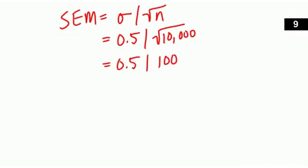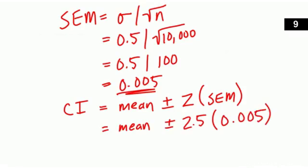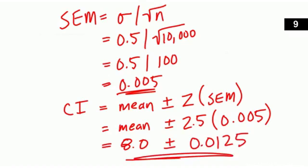The standard error is very small because the sample size is so large. For the 99% CI, Z is approximately 2.5. So Z times the standard error of the mean is 2.5 times 0.005, which equals 0.0125. The 99% confidence interval is 8.0 plus or minus 0.0125. That's the end of the end-of-session quiz, and that's the end of our lecture on confidence intervals. See you next time.